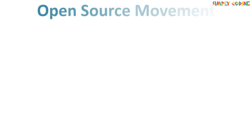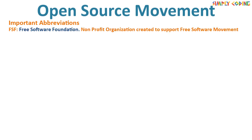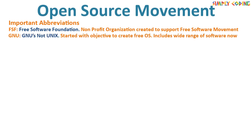Before we start questions, here is a quick summary of Open Source Software Movement and Software Licenses. First are important abbreviations — you can expect a question just on this. FSF is Free Software Foundation, a non-profit organization created by Richard Stallman in 1985 to support the free software movement. GNU's full form is GNU's Not Unix, also initiated by Richard Stallman to create a free operating system. Now it includes a wide range of software and applications too.